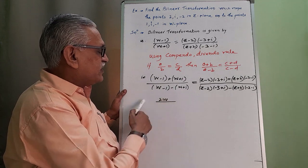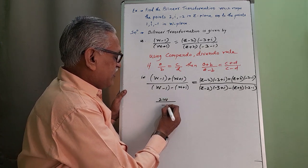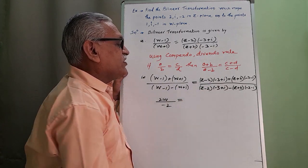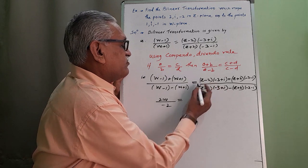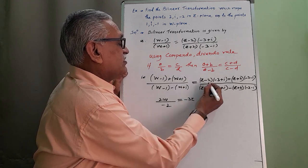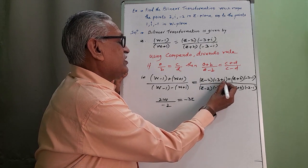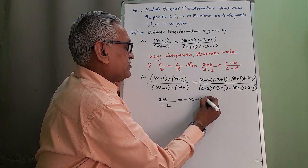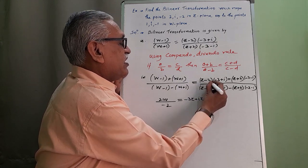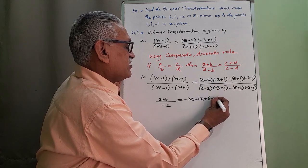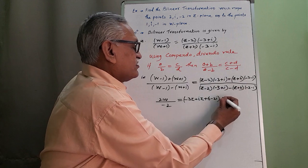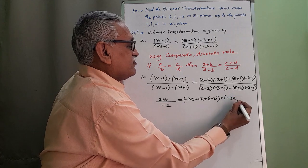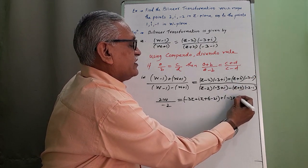Simplifying: w plus w gives 2w, and minus 1 plus 1 cancels to zero in the numerator, while w minus w cancels and minus 1 minus 1 gives minus 2 in the denominator. On the right-hand side, expanding each term: we get minus 3z plus iz plus 6 minus 2i, plus minus 3z minus iz minus 6 minus 2i.